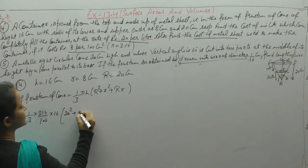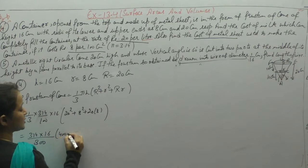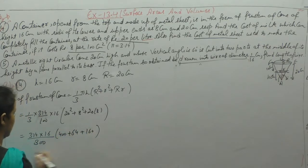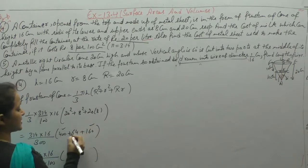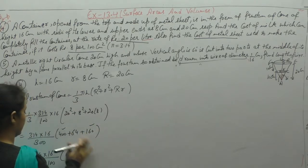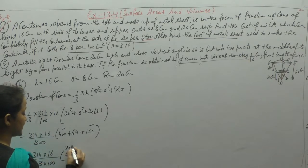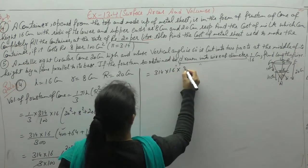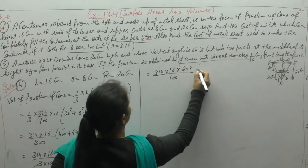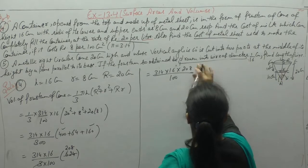Substituting: 3.14 into 16, R² = 20² = 400, r² = 8² = 64, R×r = 20×8 = 160. Adding these terms: 400 + 64 + 160 = 624. So we get 3.14 × 16 × 208 divided by 100 (since (1/3) is absorbed into the calculation).